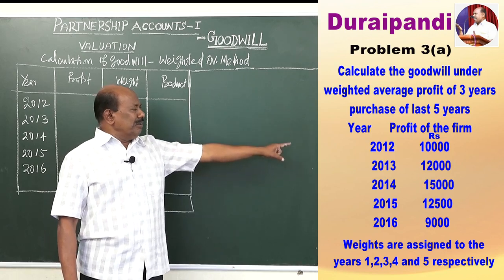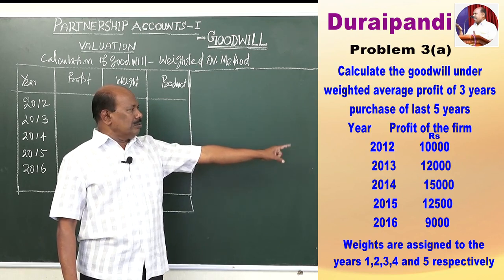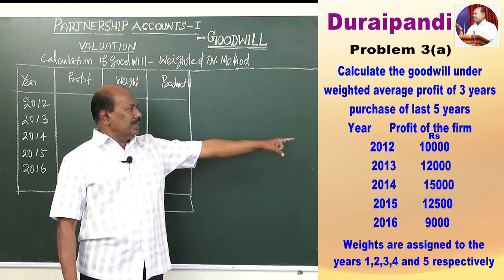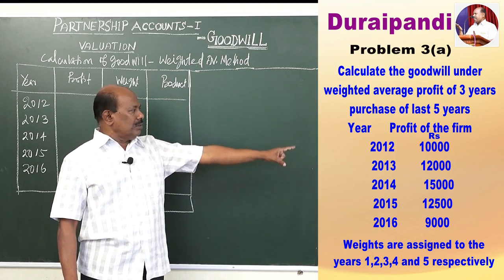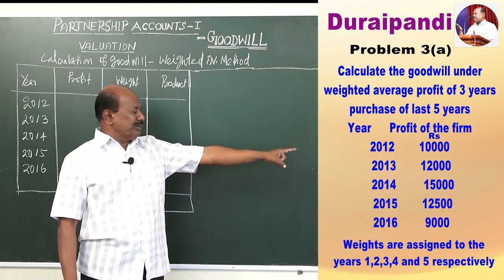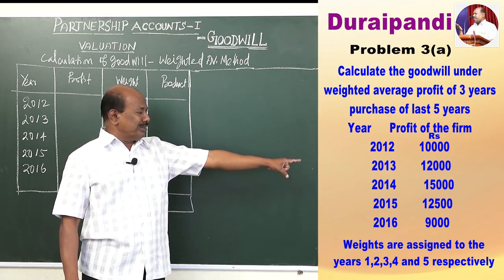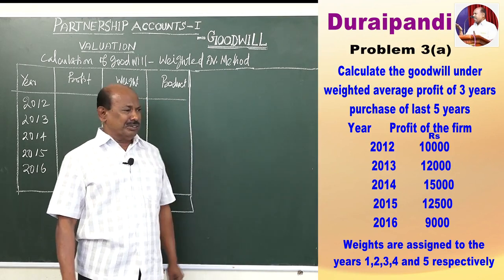The years given are: 2012, the firm's profit was 10,000; in 2013, the profit was 12,000; in 2014, 15,000; in 2015, 12,500; and in 2016, the profit was 9,000.